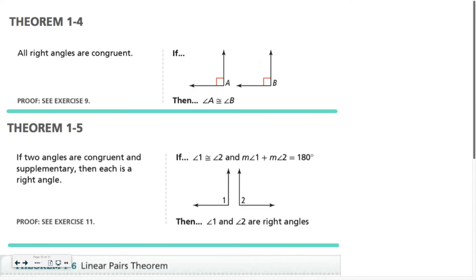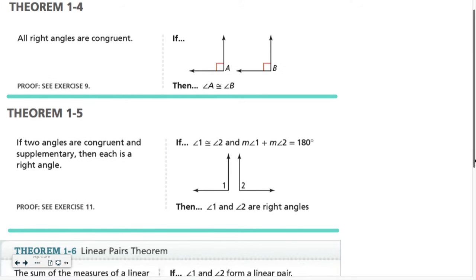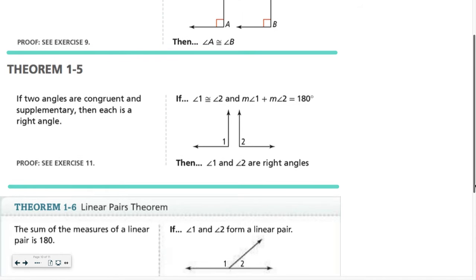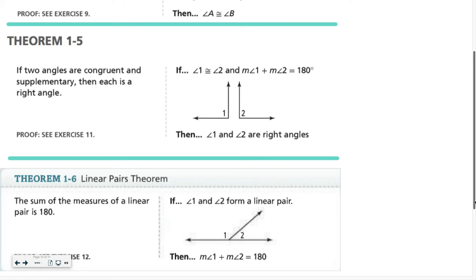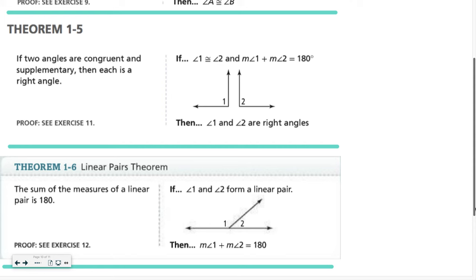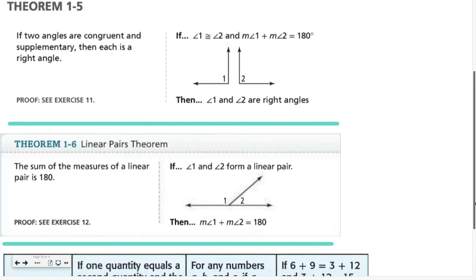Let's talk through just a couple more theorems. Theorem 1.4: all right angles are congruent — that seems self-explanatory. Theorem 1.5: if two angles are congruent and supplementary, then each is a right angle. Supplementary means they add up to 180, congruent means they have to be exactly the same. The only way to be exactly the same and add up to 180 is for both of them to be 90, or right angles.